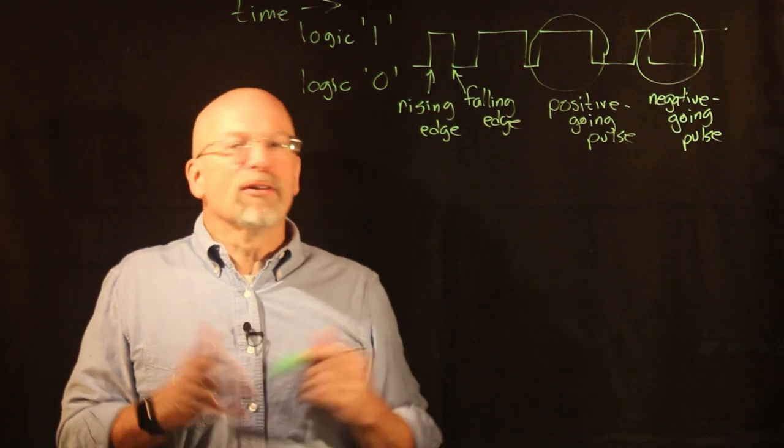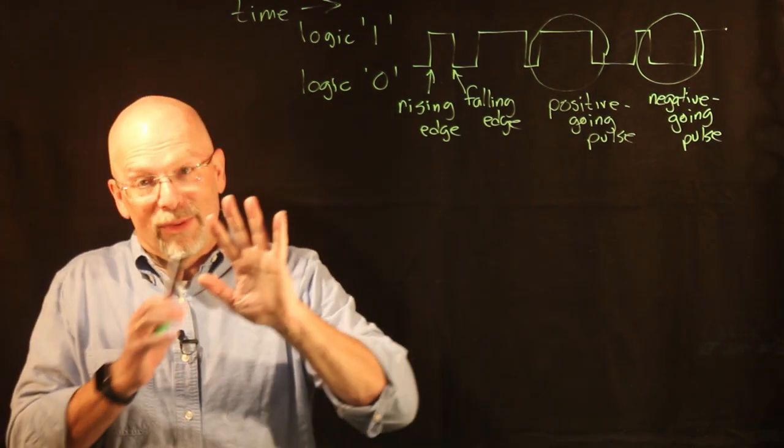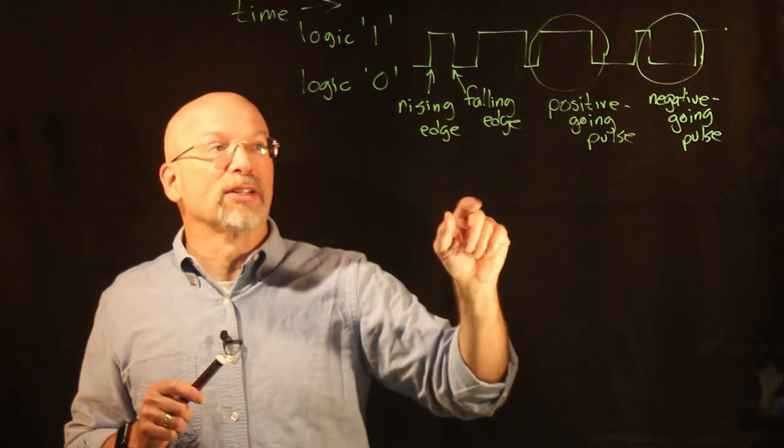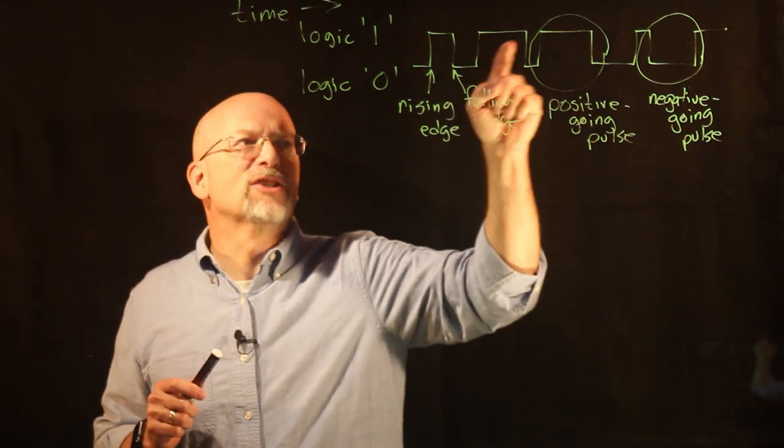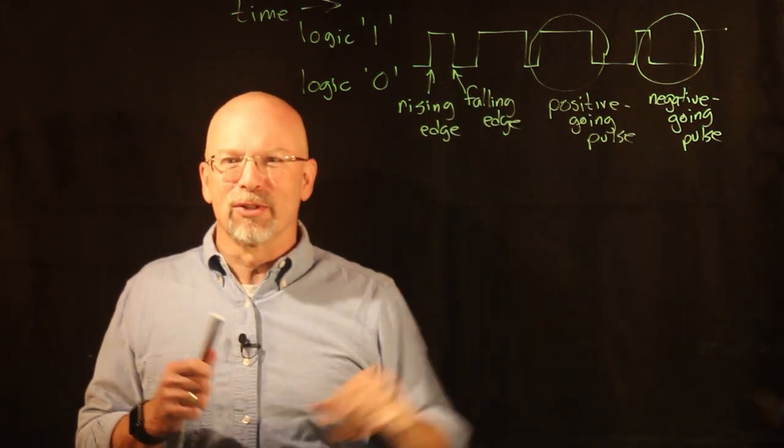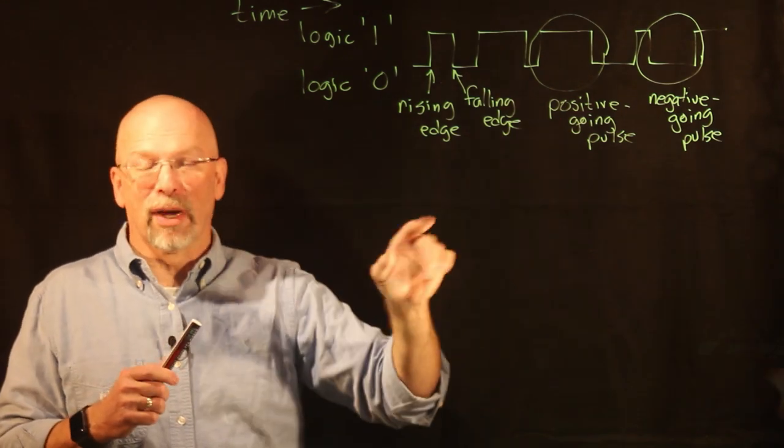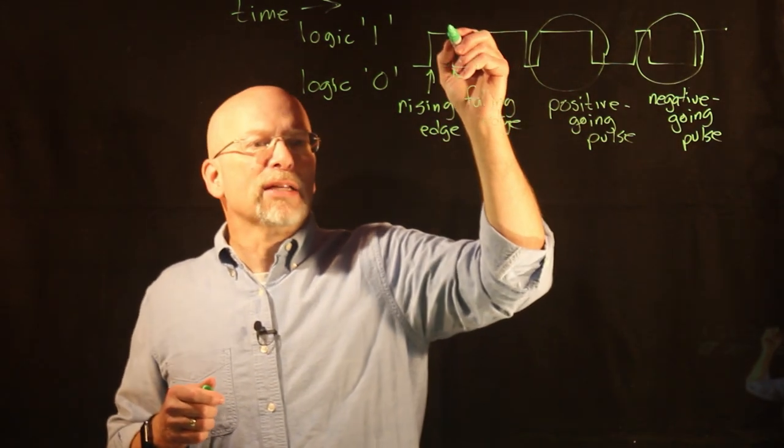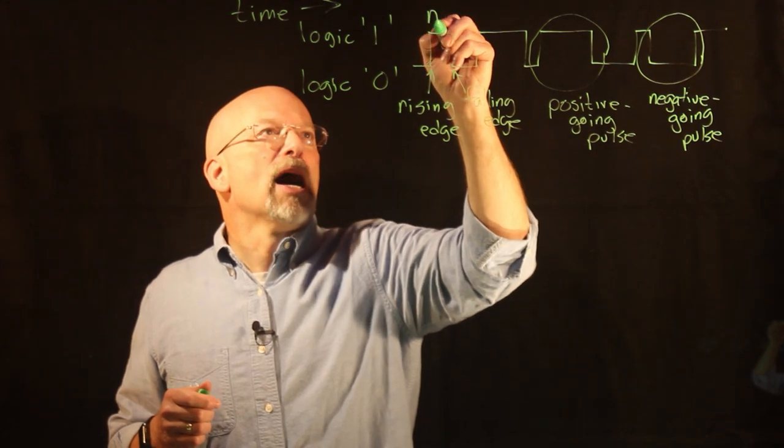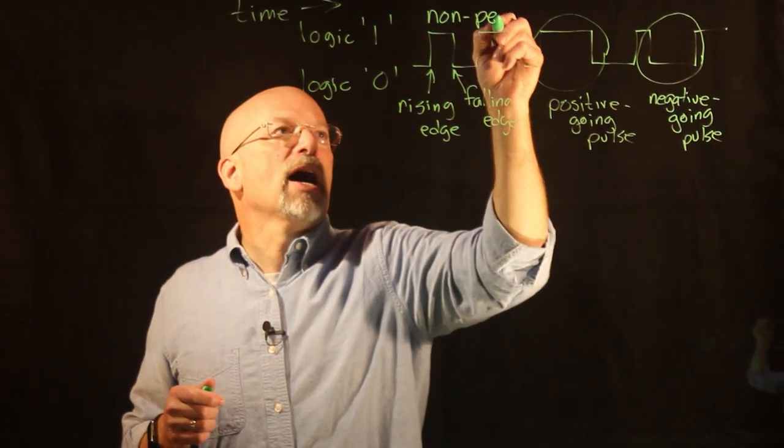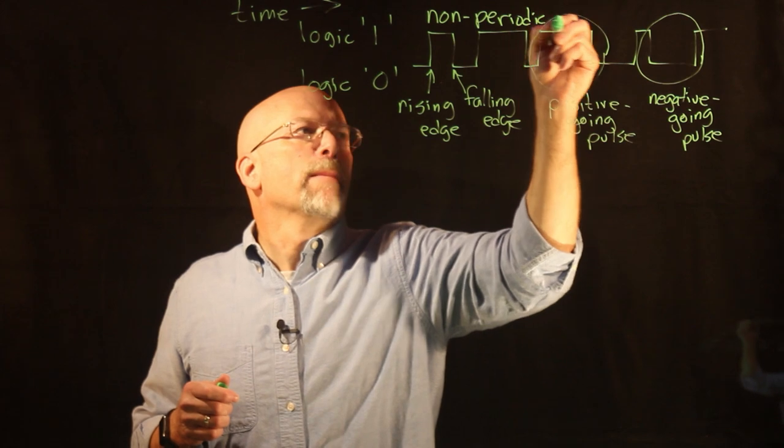What we're really going to call this signal is something called a pulse train—it is a train of pulses, a sequence of pulses. The random nature of this pulse train means we give it the name a non-periodic pulse train.